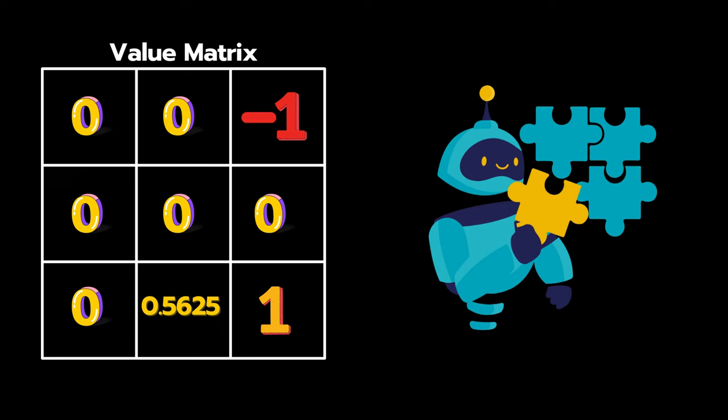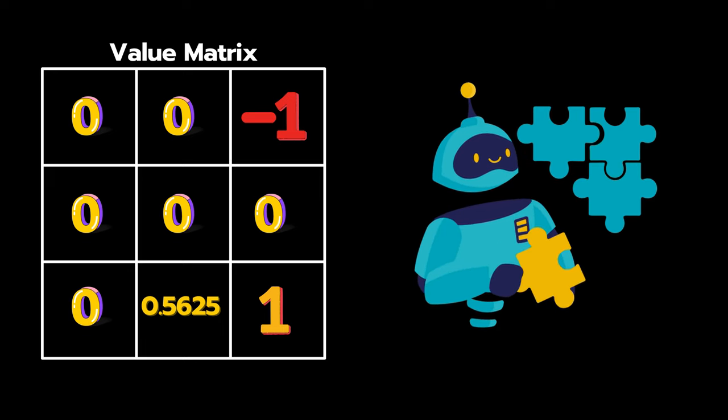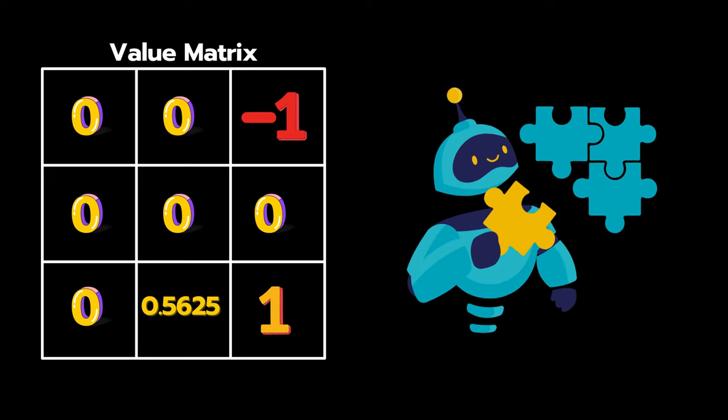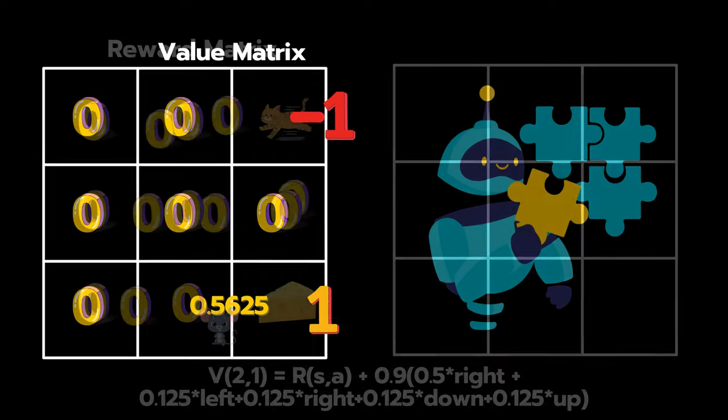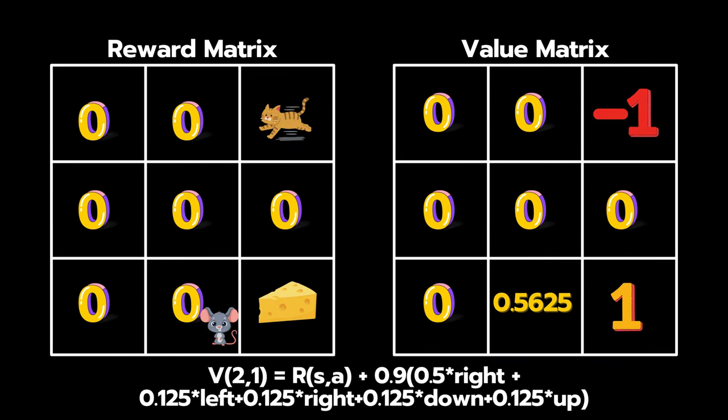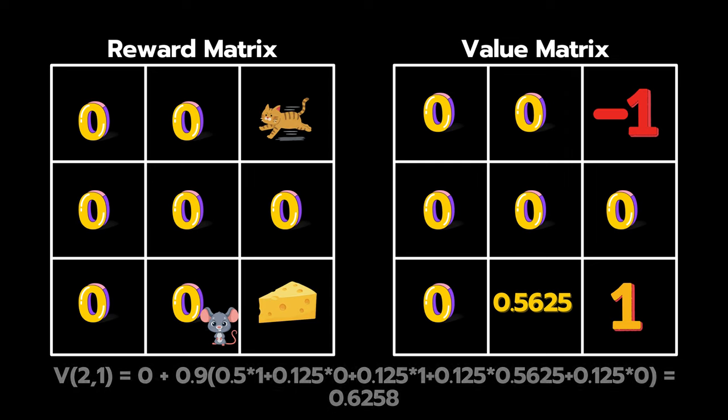However, this isn't the final value for state 2,1, as we have only computed it based on one iteration. If we repeat this calculation, substituting the newly calculated value of state 2,1 as 0.5625, we find that the value of state 2,1 now approaches 0.6528.